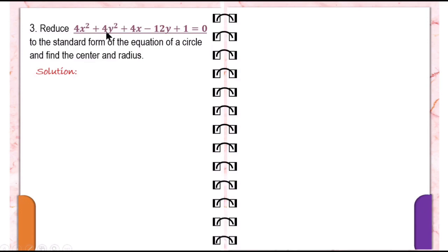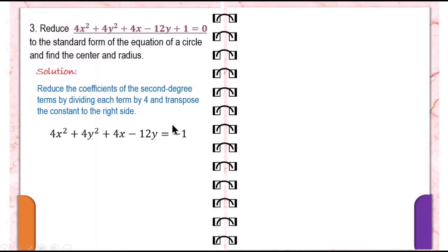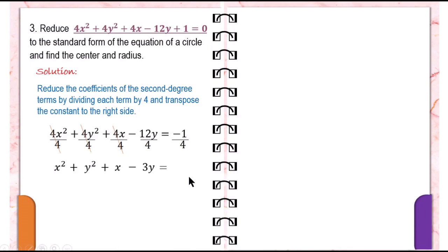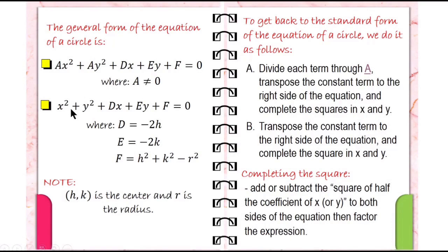When the equation has this form, to get back to the standard form of the circle, we first divide each term by a, transpose the constant term to the right side, and then complete the squares in x and y. We transpose the constant to the right side, so it becomes negative 1. Then divide each term by 4. Simplifying, we get x squared plus y squared plus x minus 3y equals negative one-fourth.